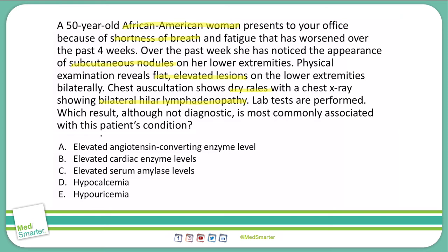Starting at the bottom: hypouricemia doesn't have anything to do with sarcoidosis — that's more related to hyperuricemia and gout — so I'm going to mark out E. D, hypocalcemia: I don't see any classic symptoms leading me there. I do remember that sarcoidosis affects calcium, but calcium is increased with sarcoidosis, not decreased, so I'm marking D out. Elevated amylase levels are certainly not associated with sarcoidosis — we have nothing to do with the pancreas — so C is out.